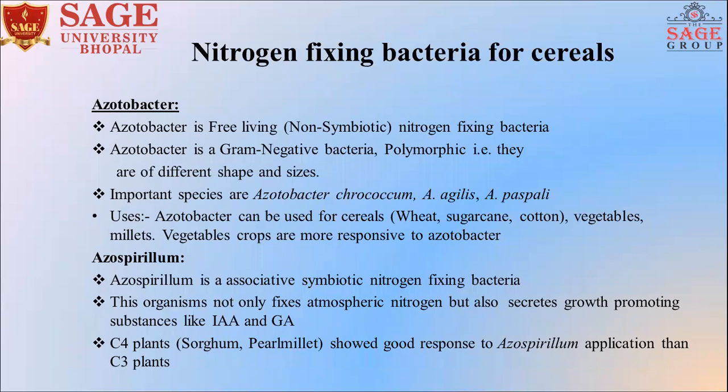Nitrogen-fixing bacteria for cereals — the first one is Azotobacter. Azotobacter is a free-living nitrogen-fixation bacteria; they are not dependent on another host. They can survive independently and fix nitrogen from the atmosphere as well as provide hormones to the crop. Important species include Azotobacter chroococcum and Azotobacter agilis. Next is Azospirillum, which is an associative symbiotic nitrogen-fixing bacteria used in sorghum and C4 plants.